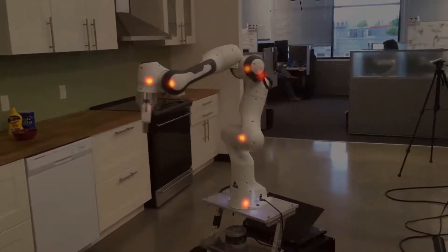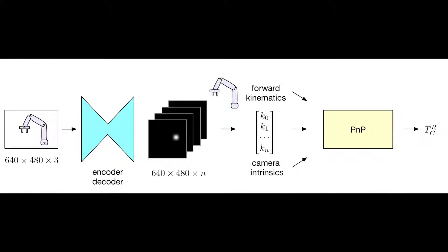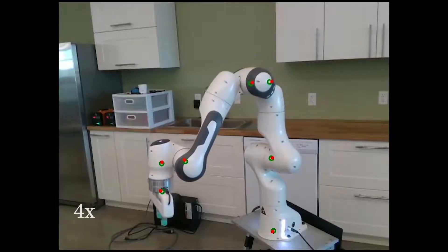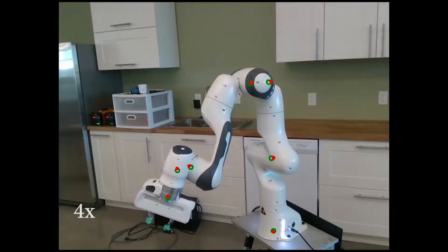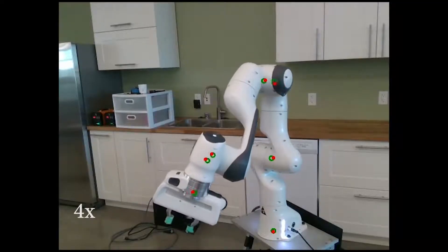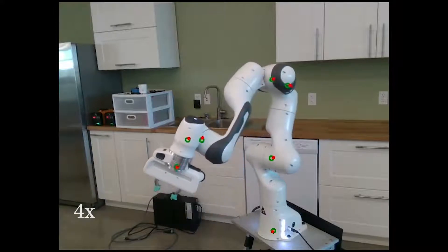Using the robot forward kinematics, the detected key points, and the camera intrinsics, we use PNP to find the camera-to-robot transform. Here we show our prediction in red with ground truth annotation in green.